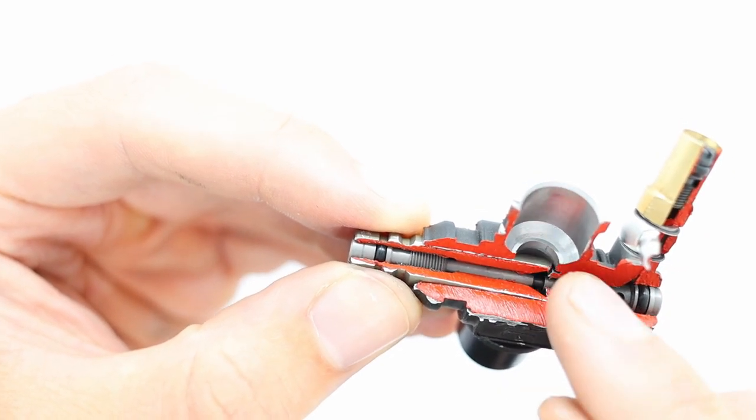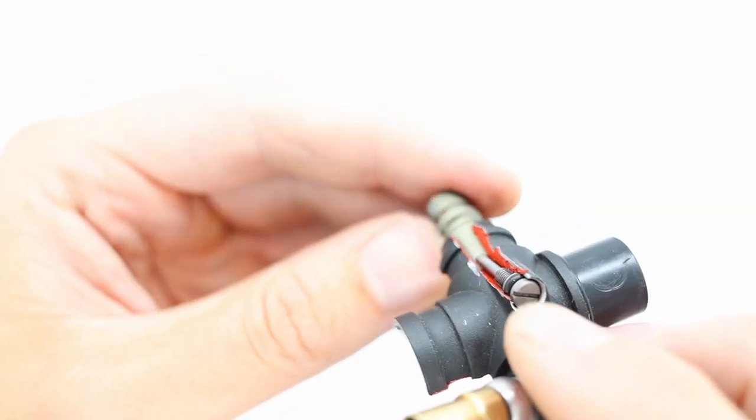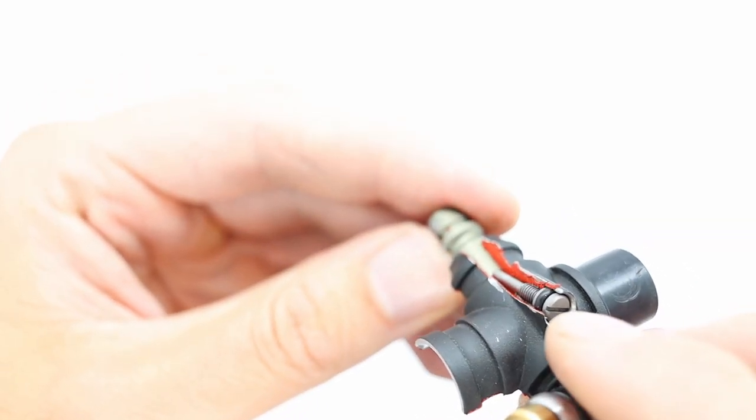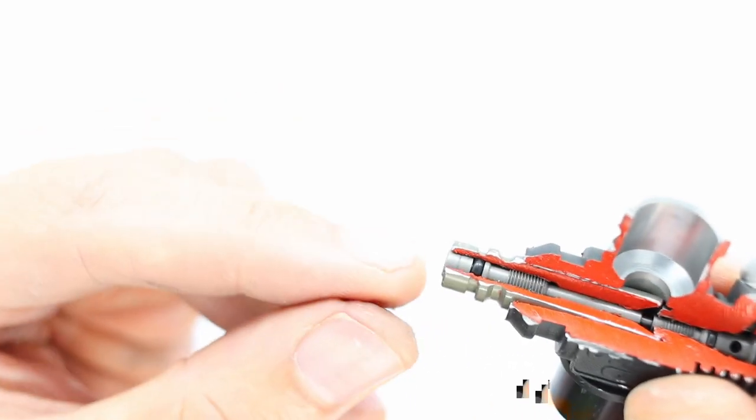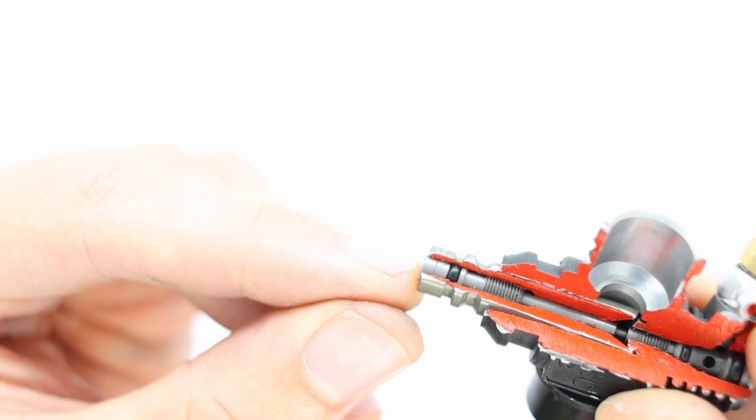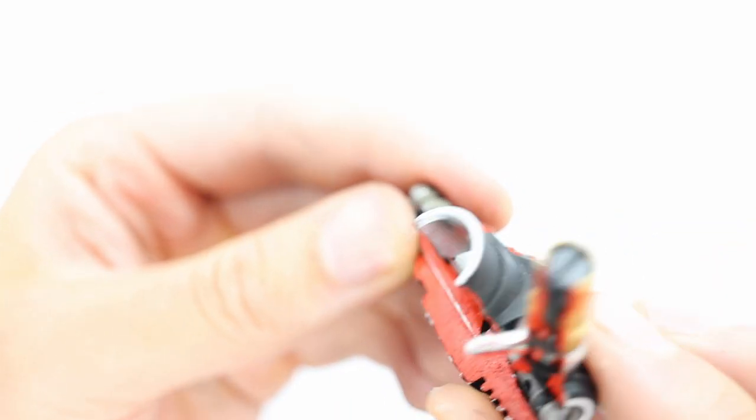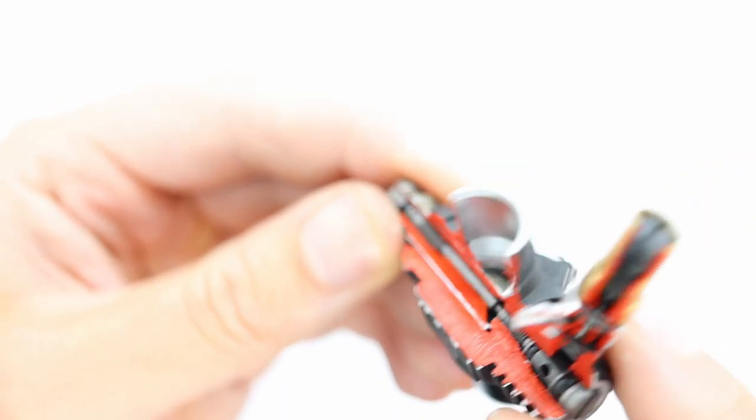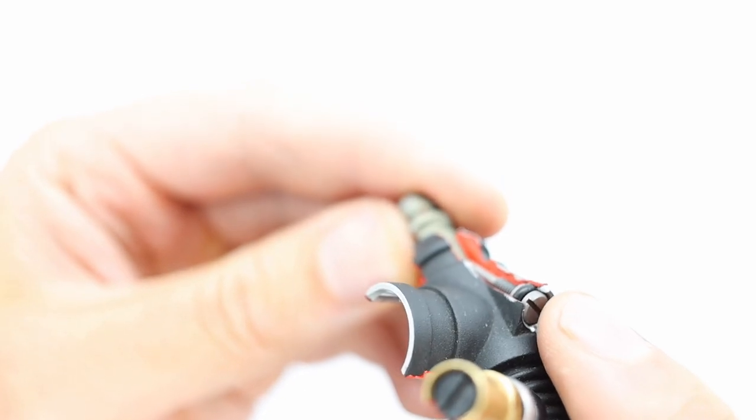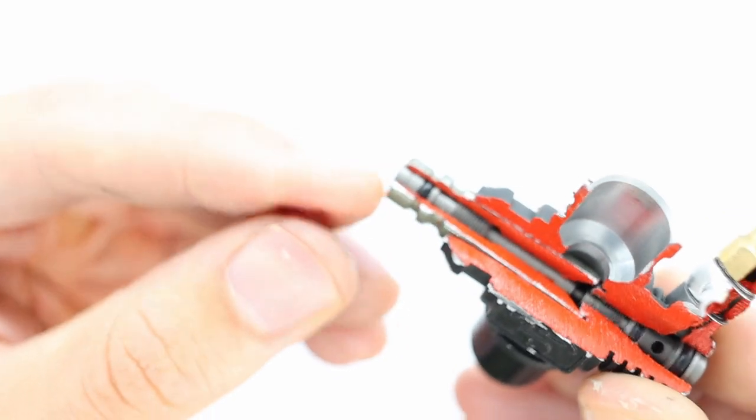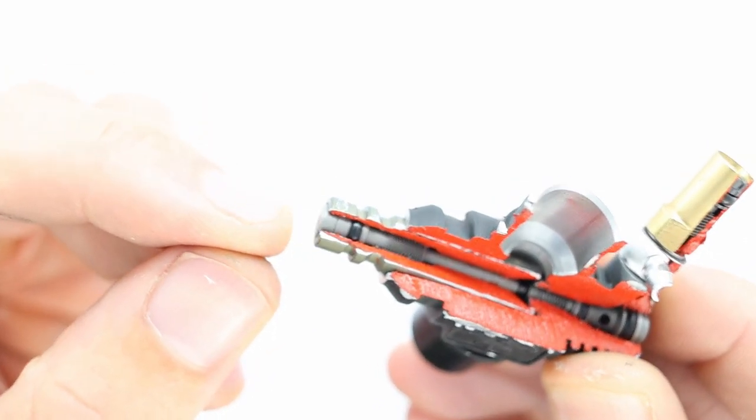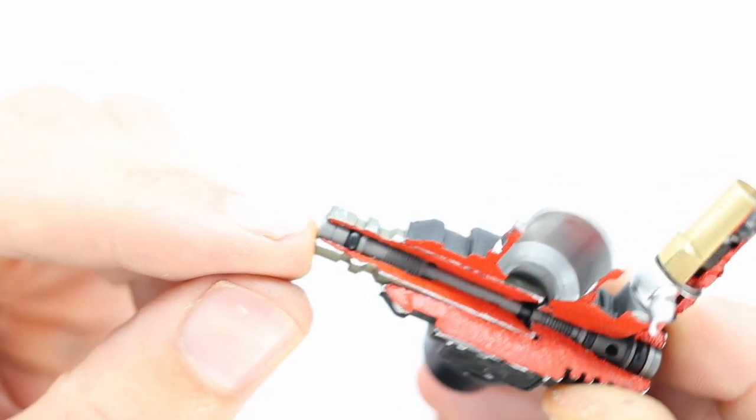And just measure the idle gap and go as small as possible. And then don't adjust the idle stop screw to set the idle. Only adjust the low speed needle to set the idle. So you measure the idle gap, you set the idle stop screw to that idle gap, and then you adjust the idle RPM with the low speed needle. That's the way to do it.